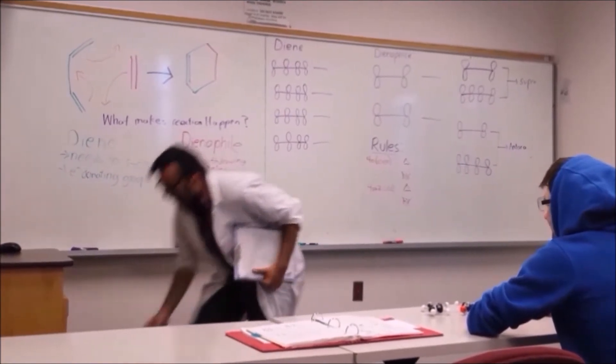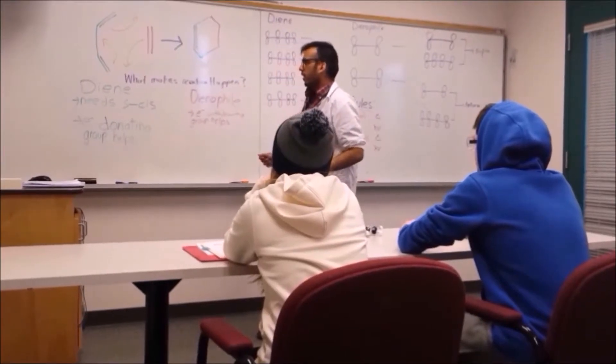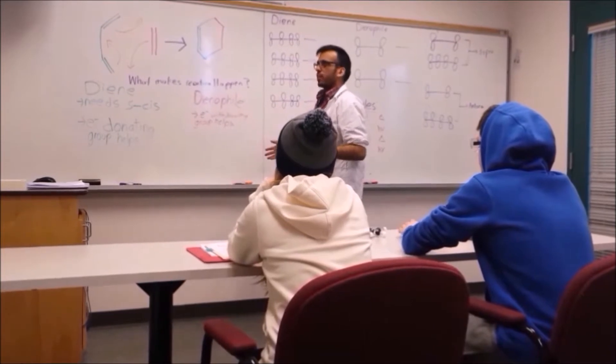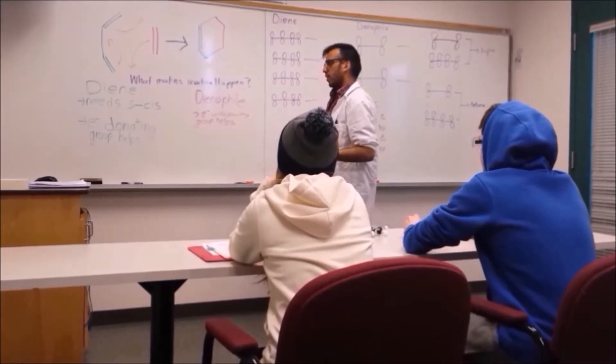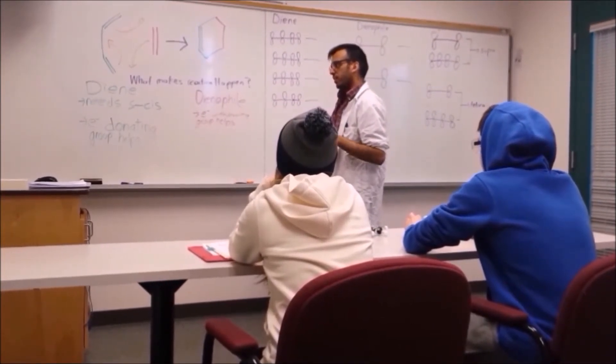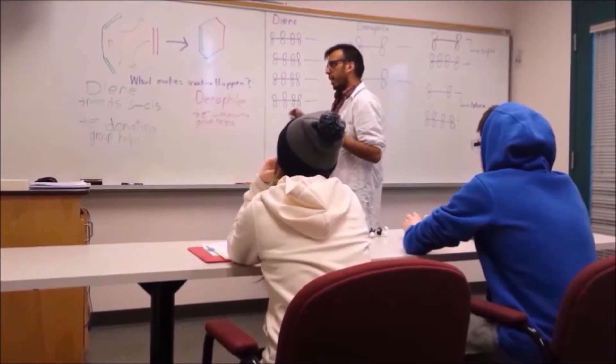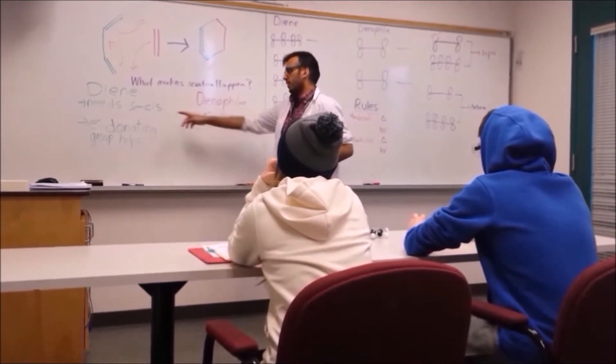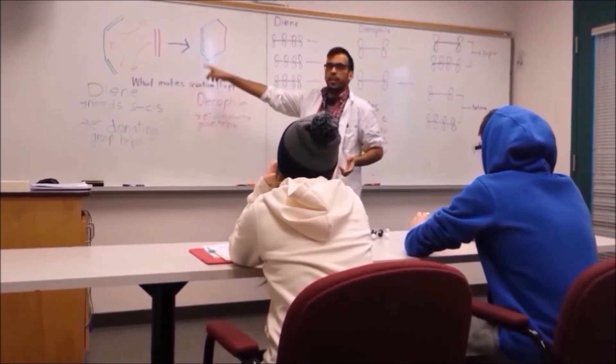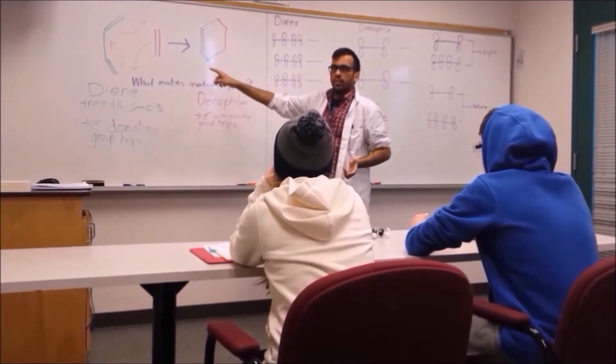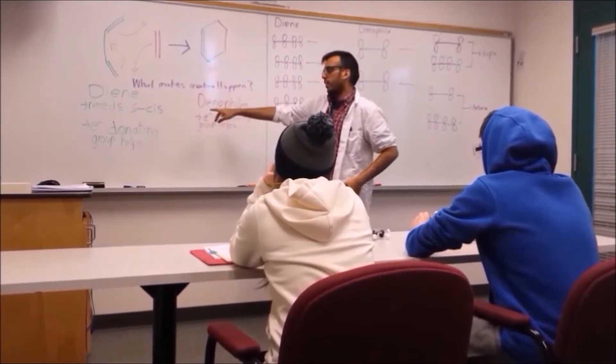Alright, so we can make this reaction happen faster, or happen at all, if we meet certain criteria. So the diene needs to be in the S-cis conformation. This is the way I've drawn it there, where you have both the double bonds in the same plane. That's non-negotiable.